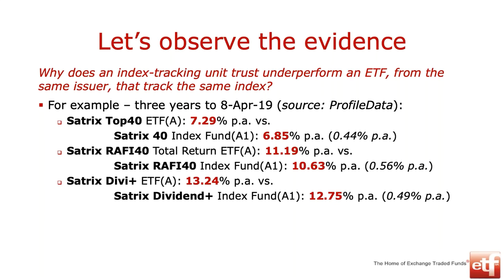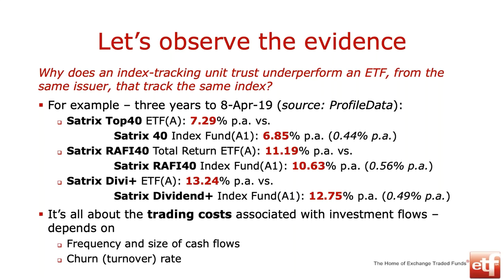Why? Because it is the cost of actually creating and redeeming those units. It's all about those trading costs associated with the investment flows. They go into the NAV, and when we look at performance we compare the net asset value from one point in time to another. After a while you see how they start drifting apart. It all depends on the frequency and size of those cash flows and the turnover rate in the fund.